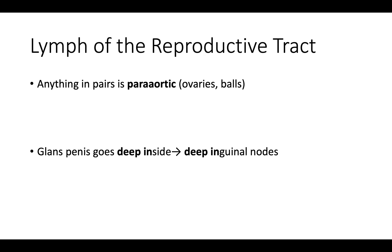Anything that comes in pairs is going to be para-aortic — that's the way that I remember it. Think about anything in pairs: your ovaries and your testicles. If you think about the anatomical origin in embryology, the ovaries and the testicles both come from either XX or XY and they come in pairs. So pair = para-aortic.